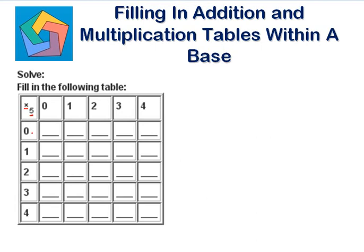Now, 0 times 0 is 0. 0 times 1 is 0. 0 times 2 is 0. 0 times 3 is 0. 0 times 4 is 0. So my first row, the entire row becomes 0.